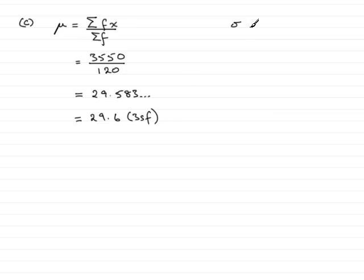When it comes to calculating sigma, you should know that this is the square root of sigma fx squared divided by the total frequency, sigma f, minus the mean, which we had over here, mu squared.